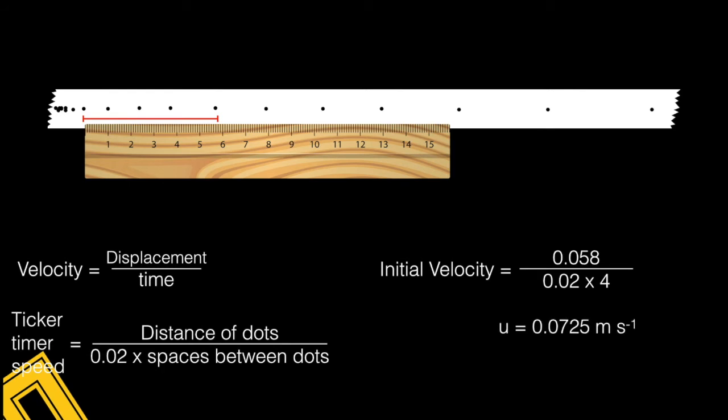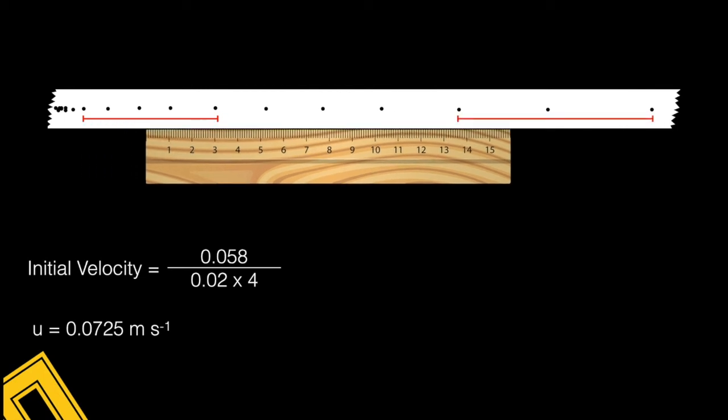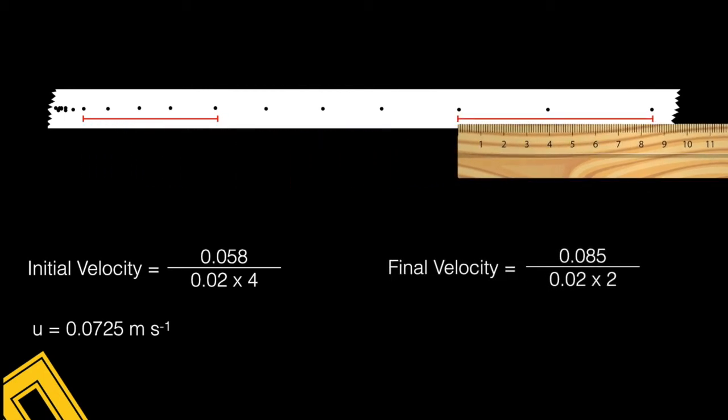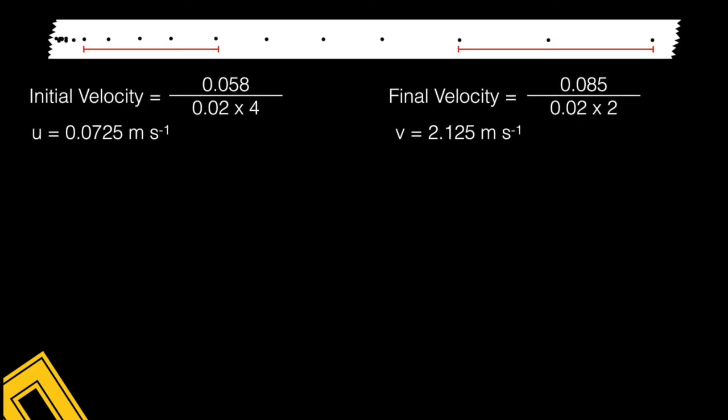Right, now I'm going to find a section near the end. I'm going to choose this section here. I'm going to measure it and do the same formula. Obviously there are only two intervals this time, and I get a final velocity of 2.125 meters per second.